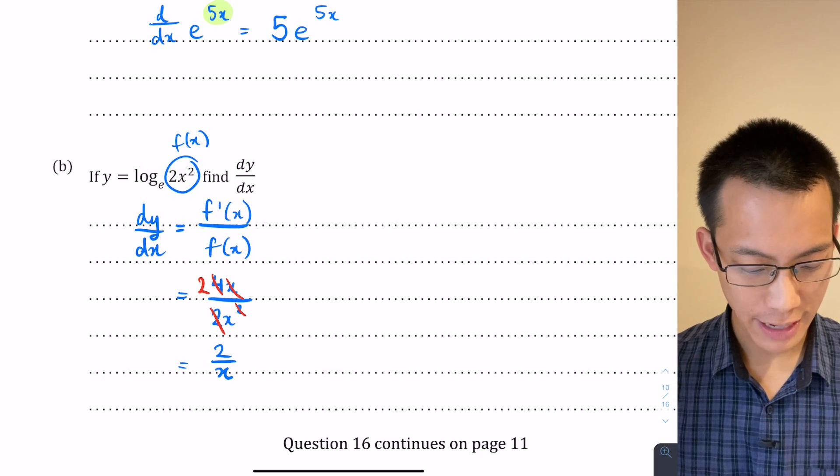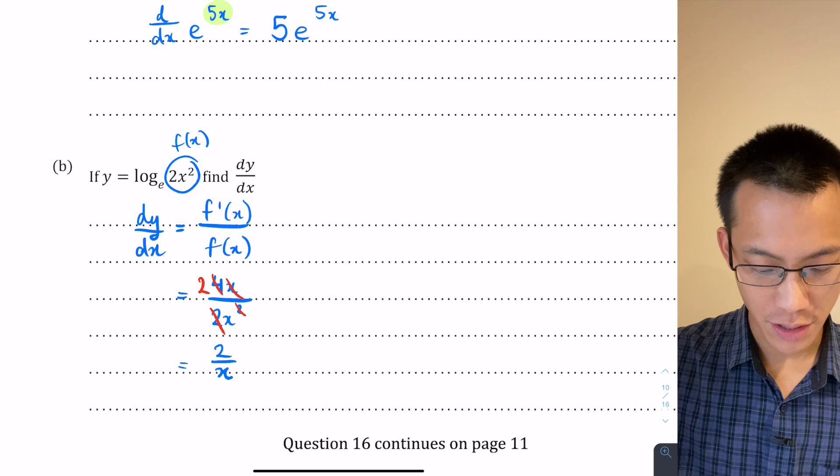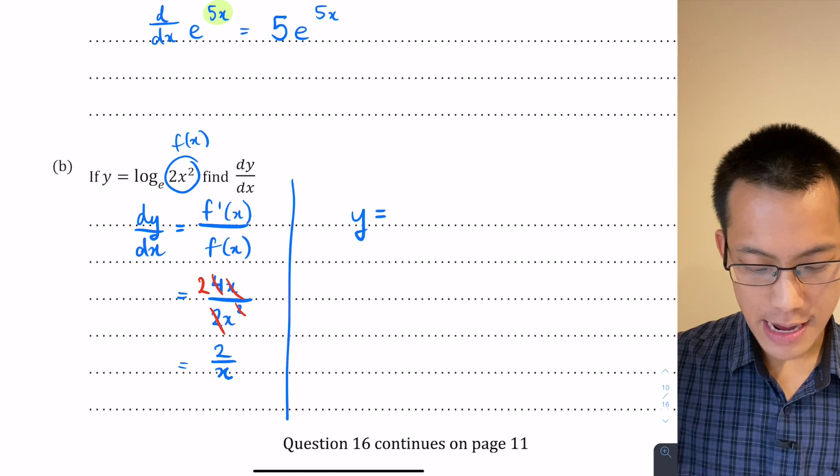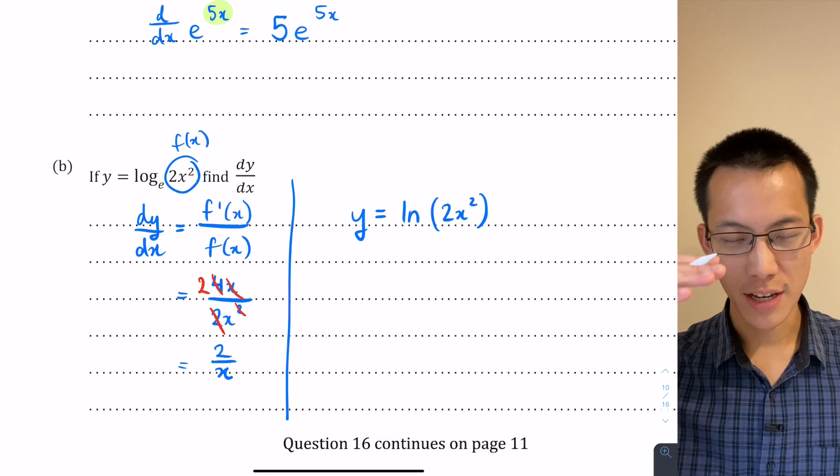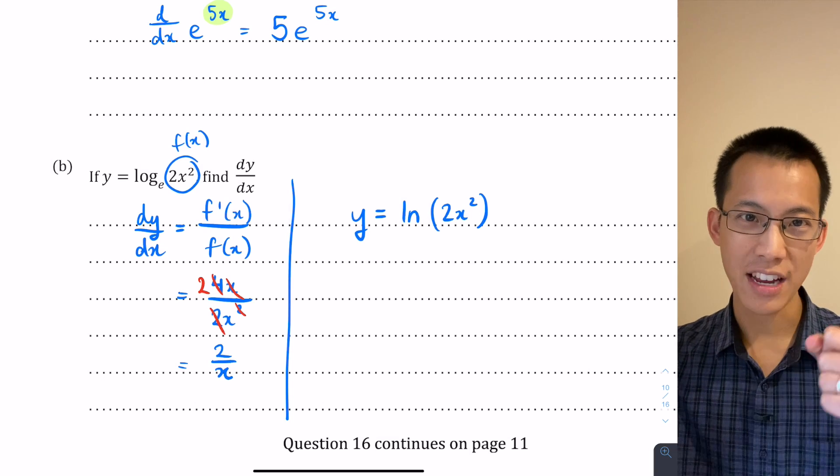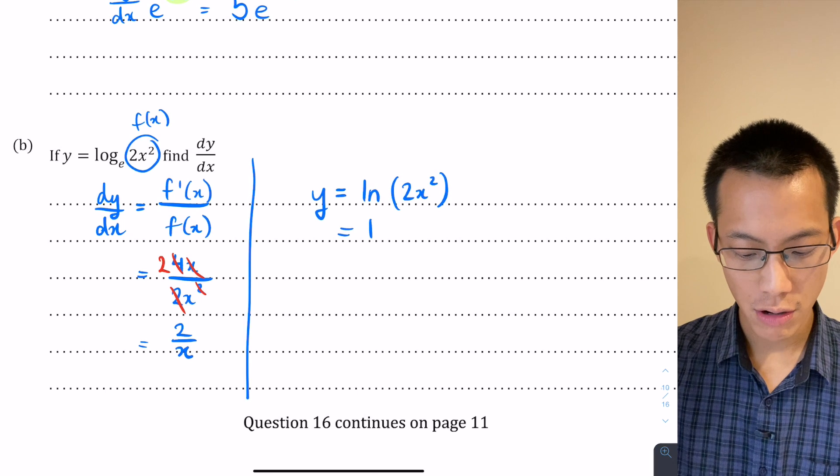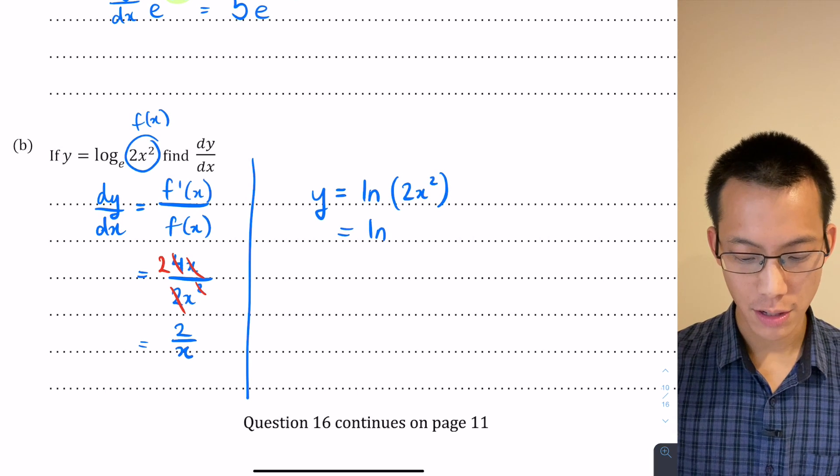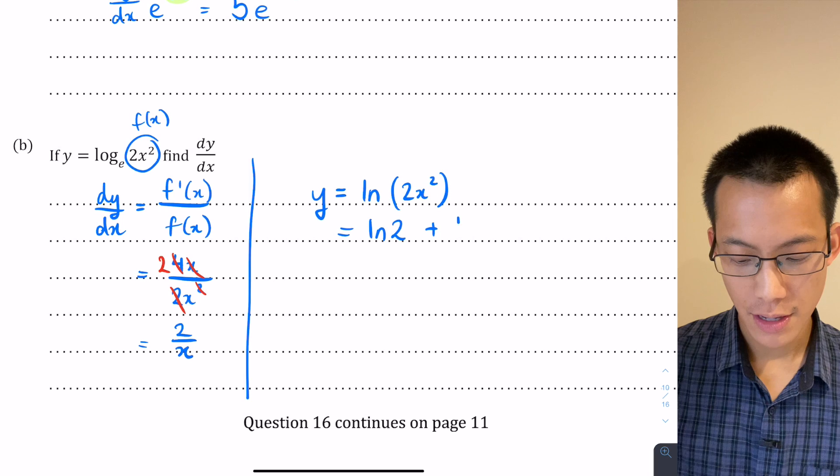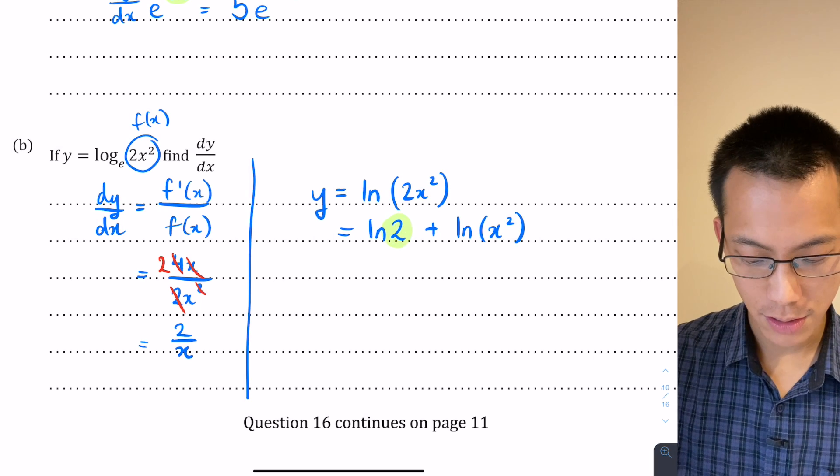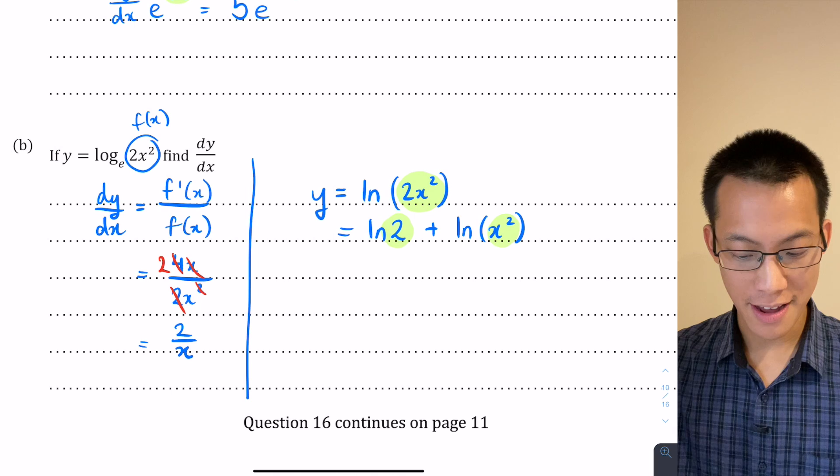Now just like in the previous question we saw with the logs, I can break this log function apart into two pieces as well. Let's have a look at how to do this another way. If I say y equals log natural log of 2x squared, we saw before when I had something divided inside the log, it becomes log something take away log something. This time I don't have division, I've got multiplication. So that means I convert this into log of something plus log of something else. I would probably say I'm going to break it into log 2 plus log of x squared.